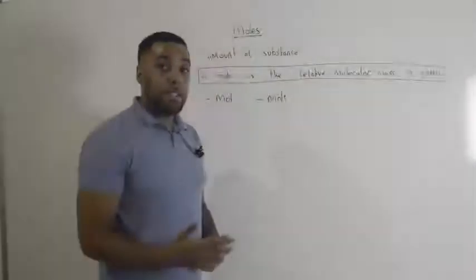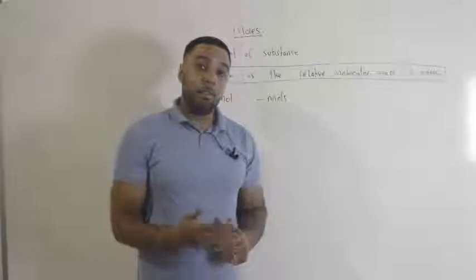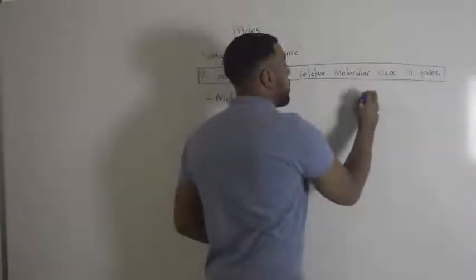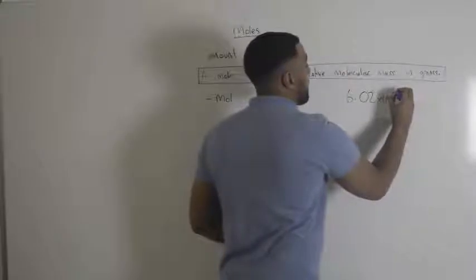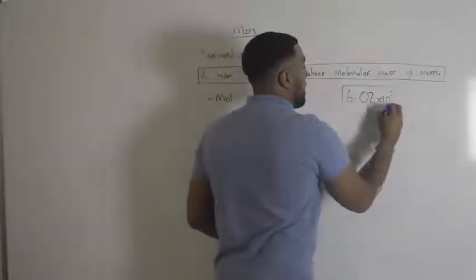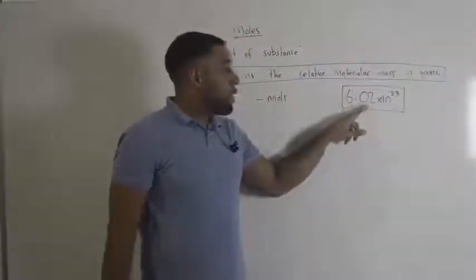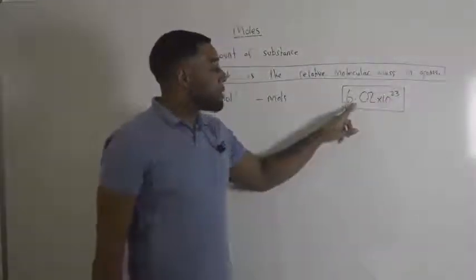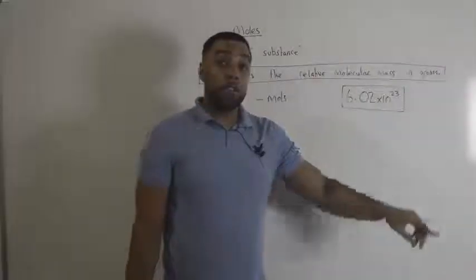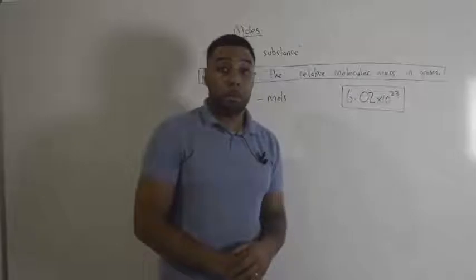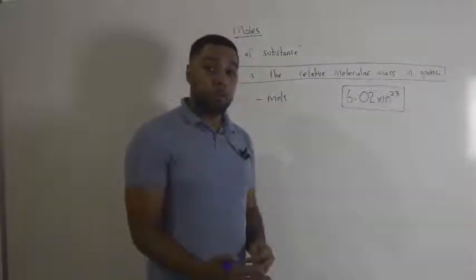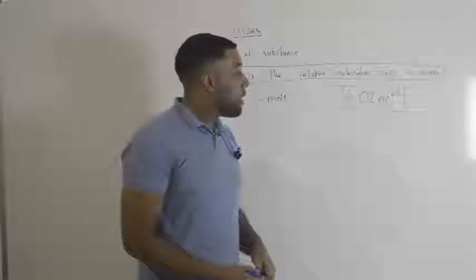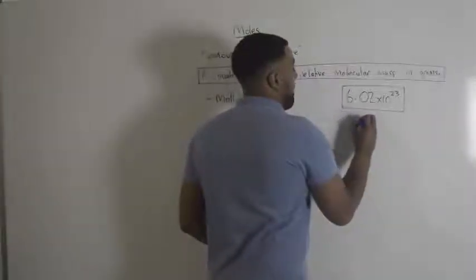The mole of any substance contains the same amount of atoms or particles. Now if we have a mole of any substance, it contains 6.02 times 10 to the 23. And what that means is 6.02 with 23 zeros after it. It's a very large number. So the mole of any substance will contain that many atoms, ions or particles. And this is called Avogadro's constant.